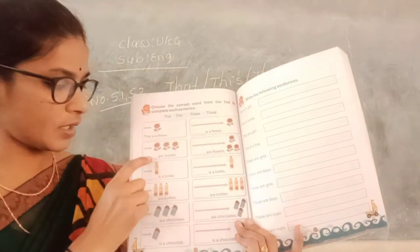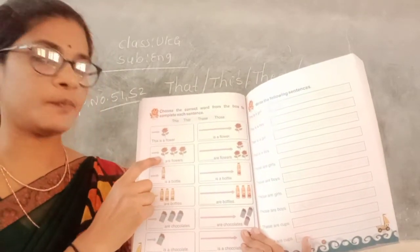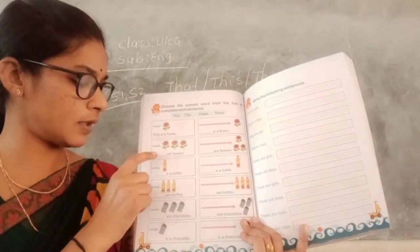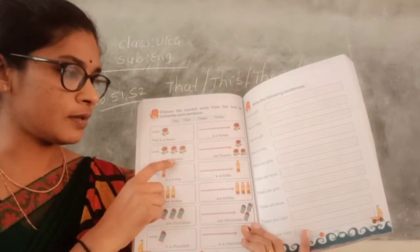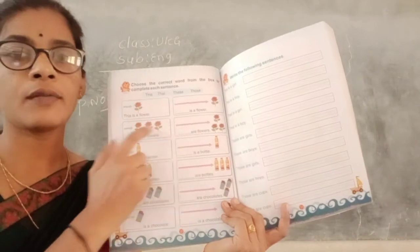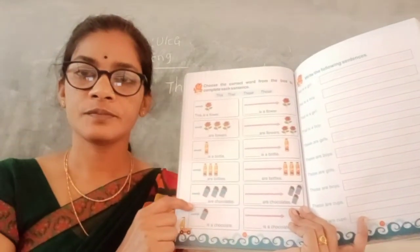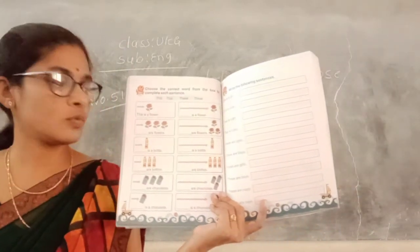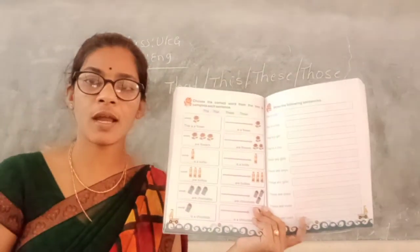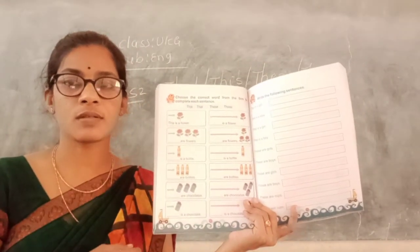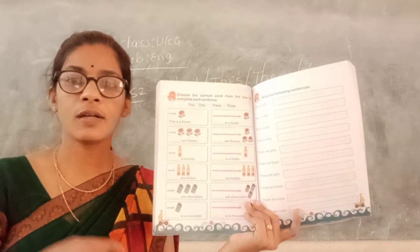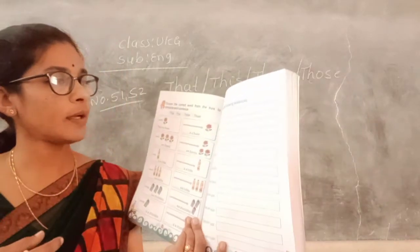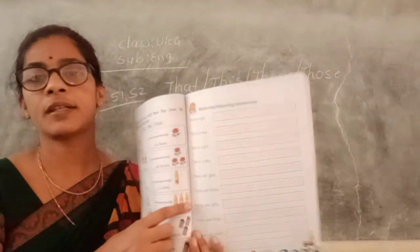So: this and that — one thing. More than one near and far: these are flowers and those are flowers. Look at the pictures — what is near to us, what is far to us, and what are more than one. Next, write the following sentence. Look here — copy writing.